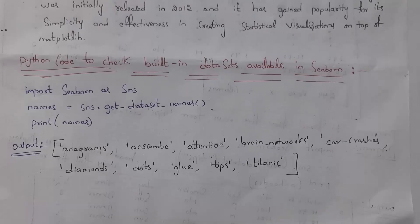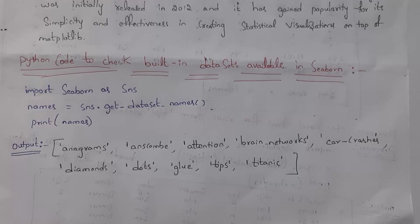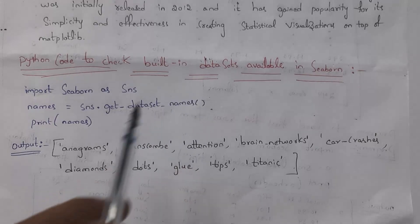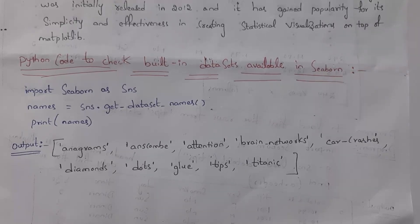In the Seaborn library, there are some built-in datasets. Built-in datasets are datasets that are already present in Seaborn, so by using these datasets we can practice data visualization. I will now explain a simple Python program in order to check the various built-in datasets that are available in Seaborn.